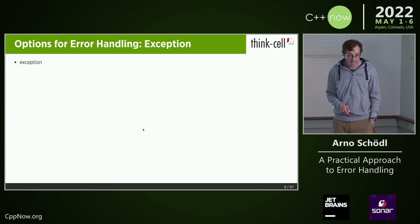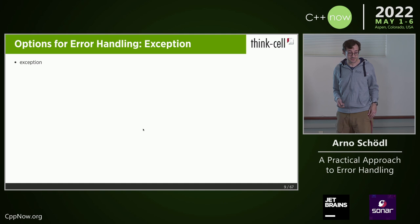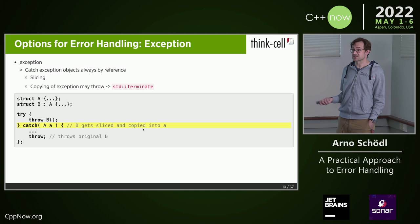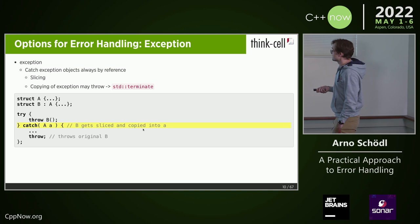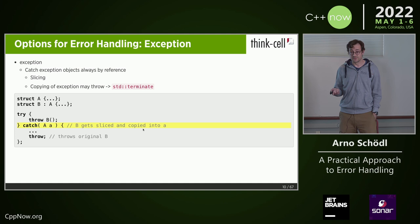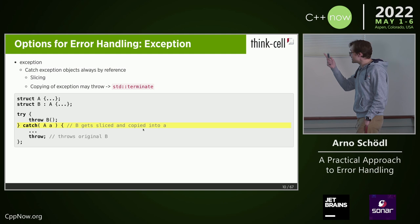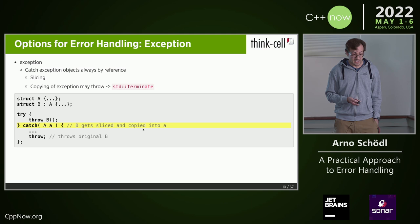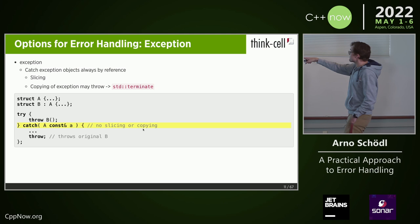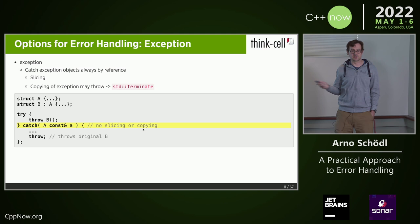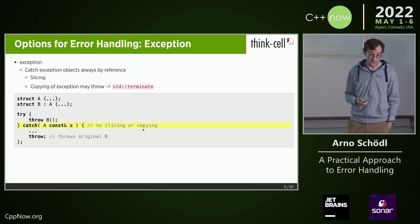And of course there are exceptions — that's the standard way how we report errors. A few things about exceptions that probably all of you know: always catch them by reference. Otherwise you get slicing, and the object gets at least partially copied. If you just catch the object without a reference, you don't get slicing but it still gets copied. If the copying throws an exception itself, then the program terminates. An interesting thing: the re-throw at the very end — if you just write 'throw;' — is always throwing the original object, no matter what you're catching.